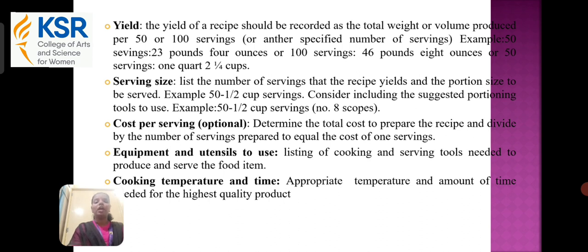For example, 50 half-cup servings are required. Cost per serving is optional — determine the total cost to prepare the recipe and divide it by the number of servings prepared to equal the cost of one serving. Equipment and utensils to use: a list of cooking and serving tools needed to produce and serve the food item. Cooking temperature and time: the appropriate temperature and amount of time needed for the highest quality of the product.